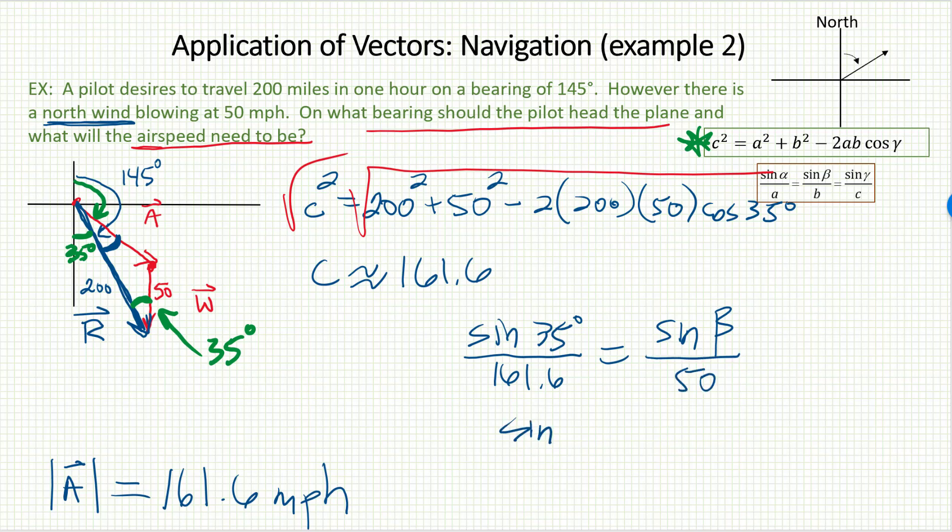Well, after I cross-multiply and then divide, I'm going to end up with sine beta is 50 sine 35 divided by 161.6, and so of course beta is just sine inverse of that ratio.